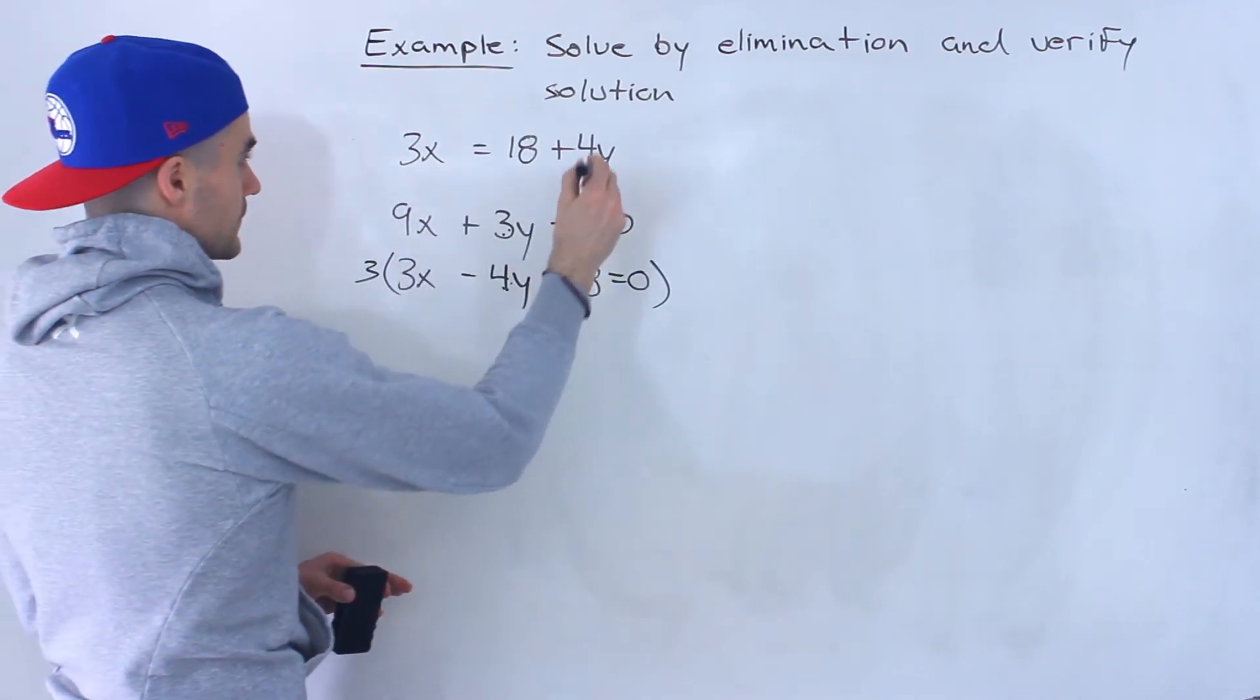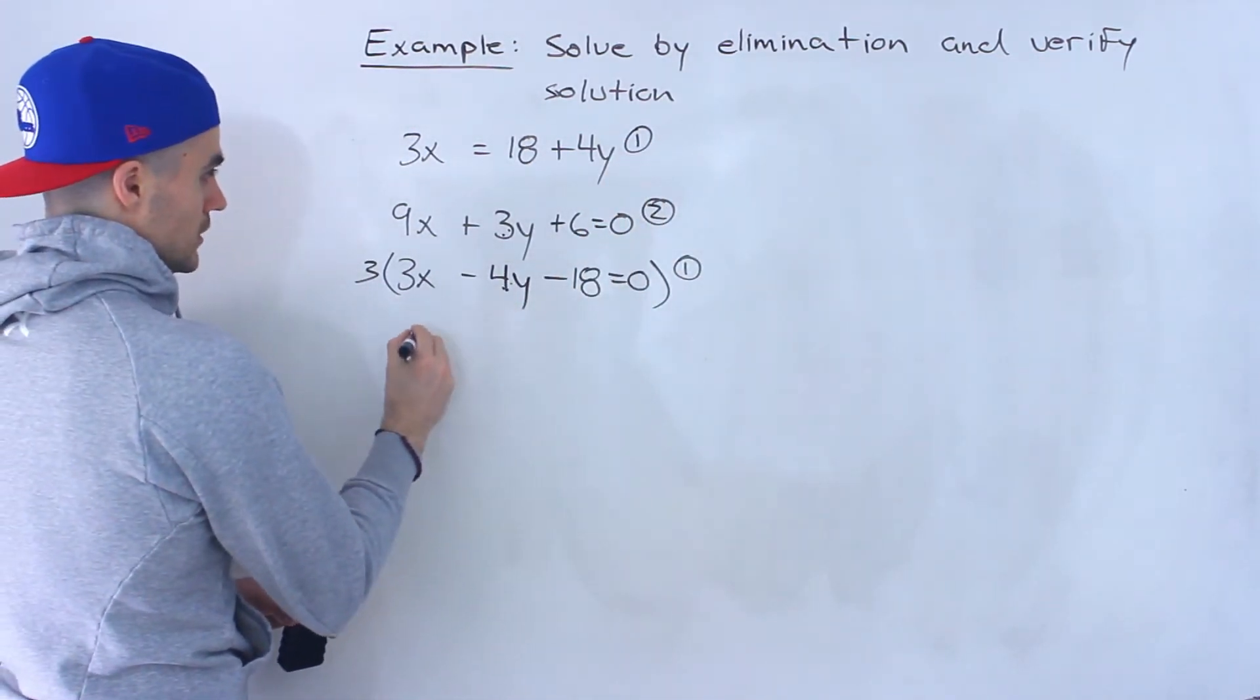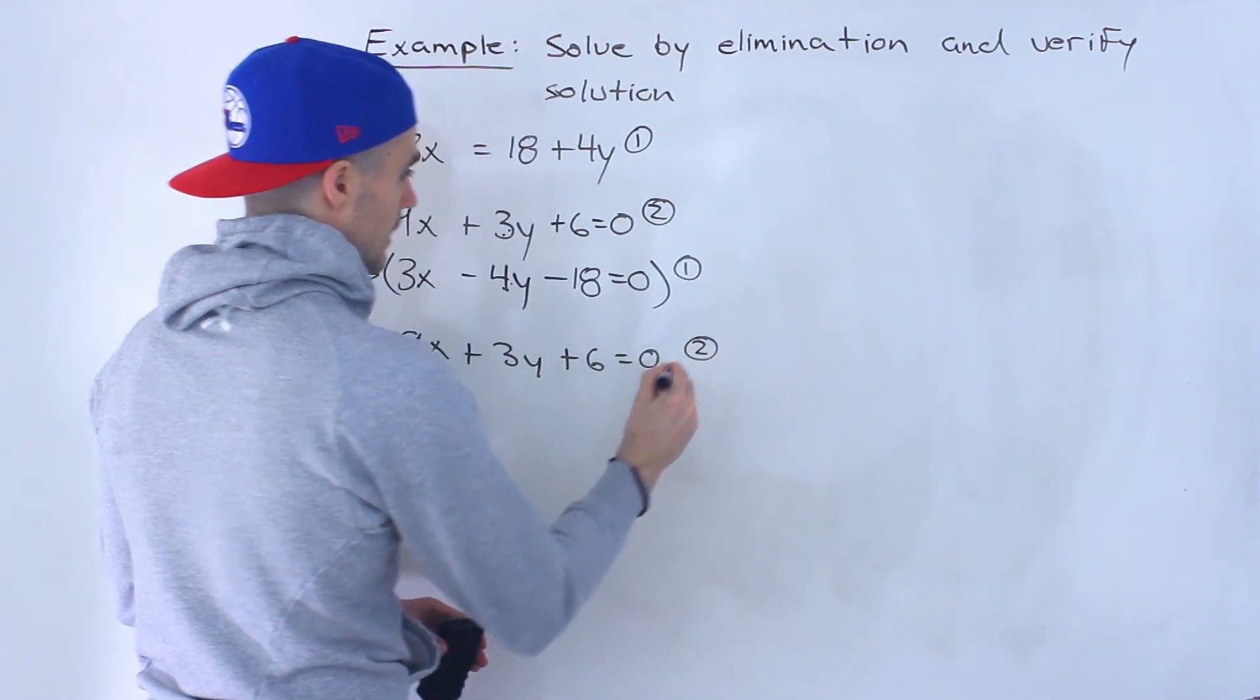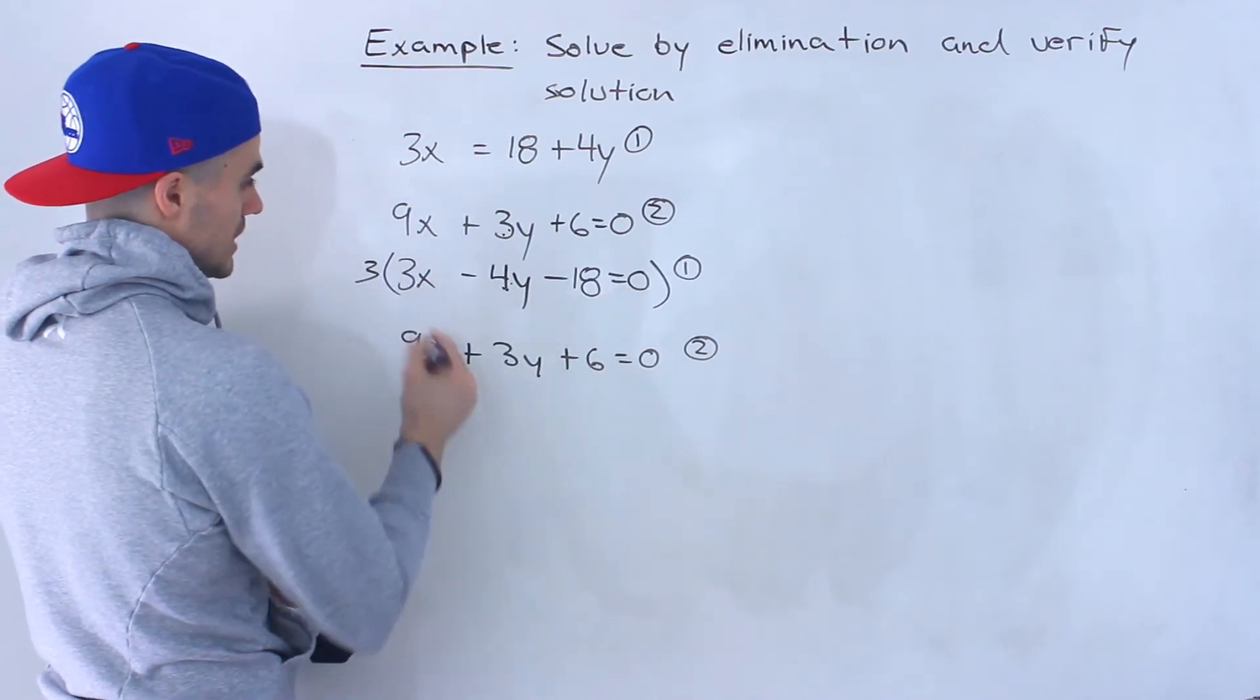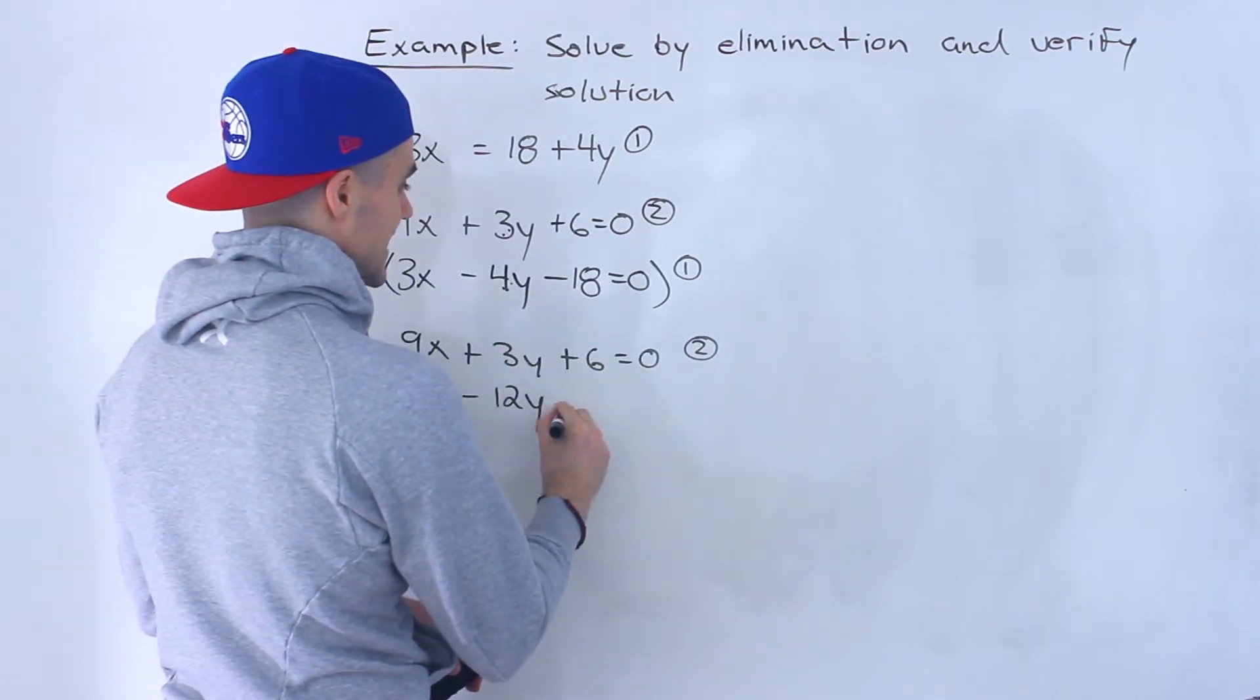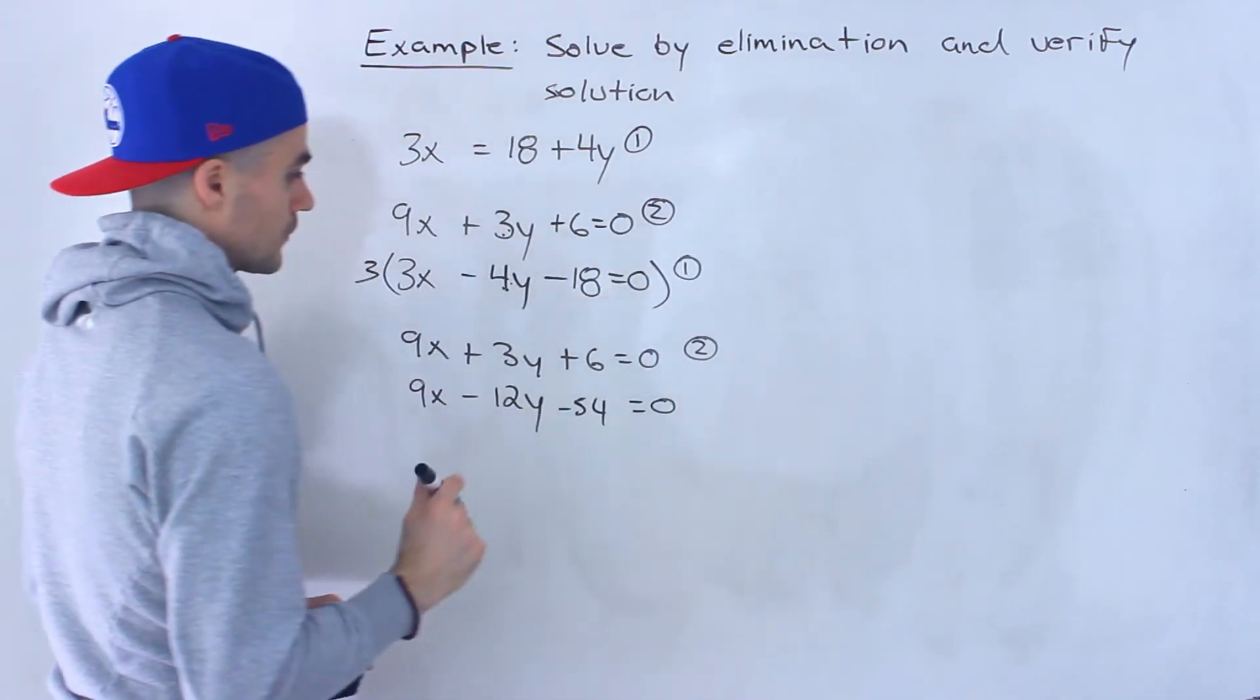Let's keep track of the lines here. So this is line 1, this is line 2, and this here is line 1 just rearranged. I'm going to rewrite line 2, and now I'm going to rewrite line 1 but multiply everything by 3. So 3 times 3x gives us 9x, 3 times negative 4y gives us minus 12y, 3 times negative 18 gives us negative 54, and 3 times 0 gives us 0. You got to make sure you multiply everything on the left side, everything on the right side.